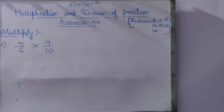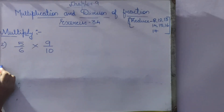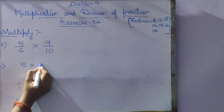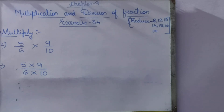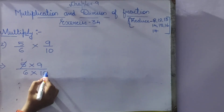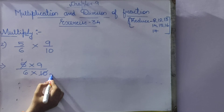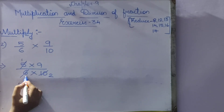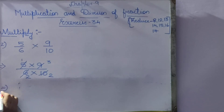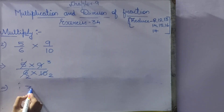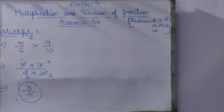Question 2: 5/6 × 9/10. We write 5 × 9 and 6 × 10. Now simplify: 5 and 10 are divisible — 5 ones are 5 and 5 twos are 10. Also 6 and 9 are divisible — 3 twos are 6 and 3 threes are 9. What is left: 1 × 3 = 3 and 2 × 2 = 4. Answer is 3/4.